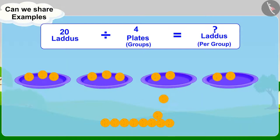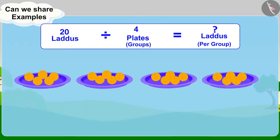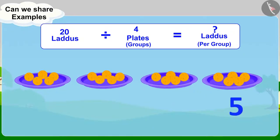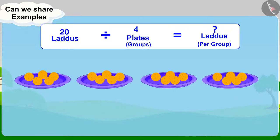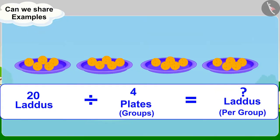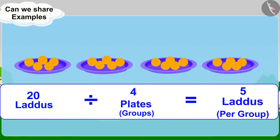We will repeat it till all the laddoos are over. We can see that there are 5 laddoos in each plate. In this way, 4 equal groups of 20 laddoos equals 5 laddoos per group.